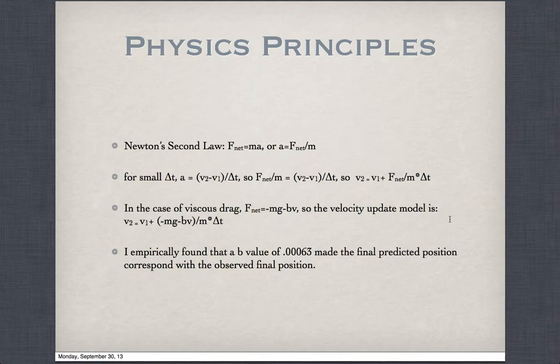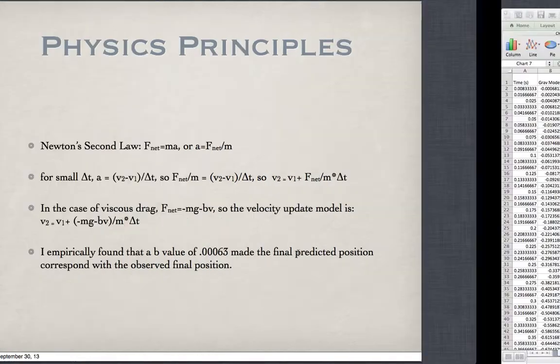The velocity update model that I used in VPython is current velocity minus (mg minus bv) over m times delta t. I had to empirically find a value for b that would make the final predicted position match the observed final position. I found that a b value of 0.0063 made that happen.